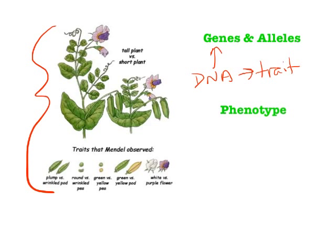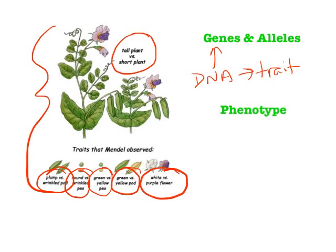If you look closely, each one of these different traits has two different versions. There's green versus yellow, and white versus purple. These two different versions are called alleles — A-L-L-E-L-E. Alleles are different versions of a gene. So we have a gene for plant height, and then two different appearances of that gene: a tall allele and a short allele. Each different version of a trait is an allele. Plump versus wrinkled are two alleles; round versus wrinkled are two alleles for the shape of the pea.